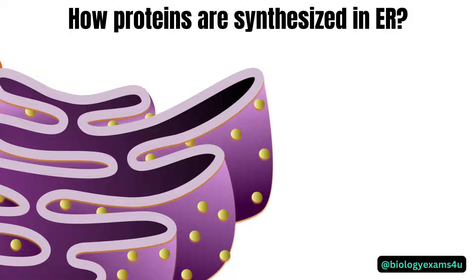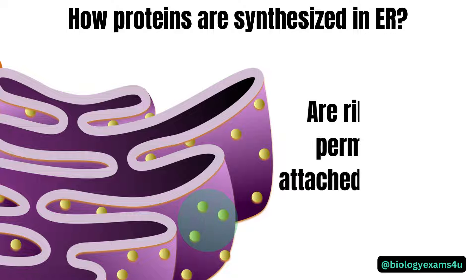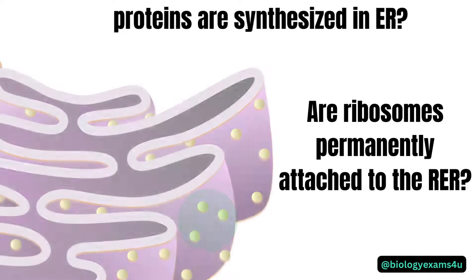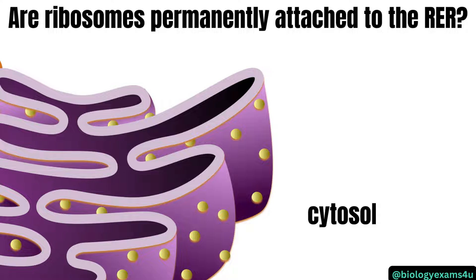Let's begin with a question for concept clarity. We know that RER is the site of membrane and secretory protein synthesis and it has ribosomes attached to its outer surface. But the question is: are ribosomes permanently attached to the rough endoplasmic reticulum? Actually, the ribosomes of the RER are not permanently attached to the membrane — they constantly attach and detach as needed for protein synthesis.